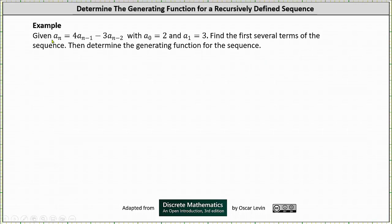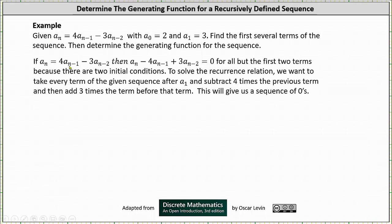If we are given a sub n equals four times a sub n minus one minus three times a sub n minus two, and we set the right side of the equation equal to zero, then we have a sub n minus four times a sub n minus one plus three times a sub n minus two equals zero. This will be true for all but the first two terms because there are two initial conditions. To solve the recurrence relation, we want to take every term of the given sequence after a sub one, subtract four times the previous term, and then add three times the term before that. This will give us a sequence of zeros, which will allow us to determine the generating function.